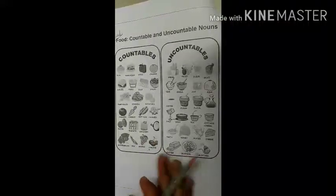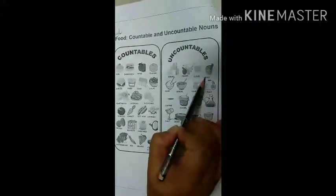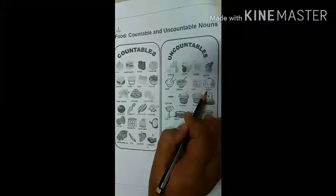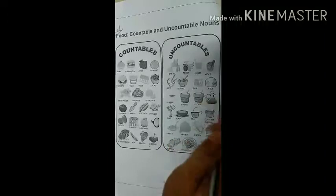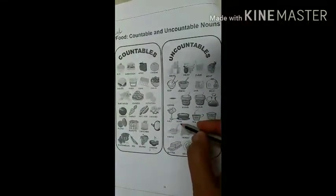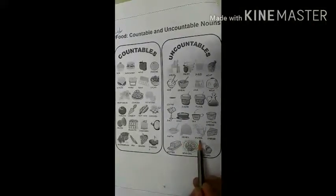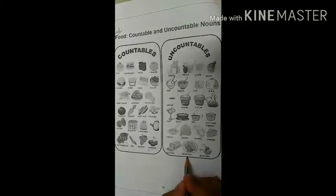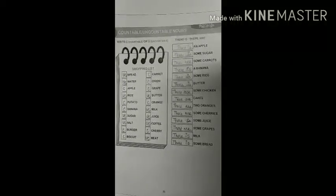Uncountable nouns include: bread, fruits, juice, meat, rice, cereal, jam, milk, coffee, sugar, flour, salt, soup, tea, cottage cheese, pasta, honey, water, cheese, butter, seafood, and mustard. Now turn the page and come to the exercise portion on page number 19.